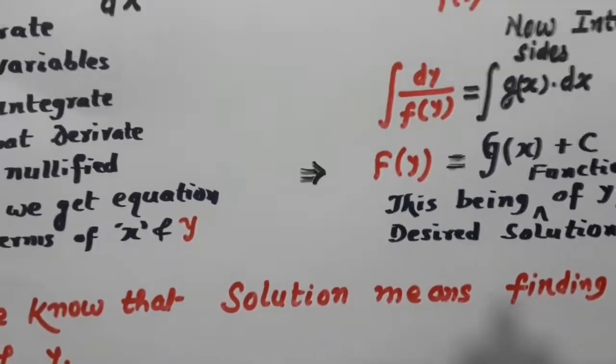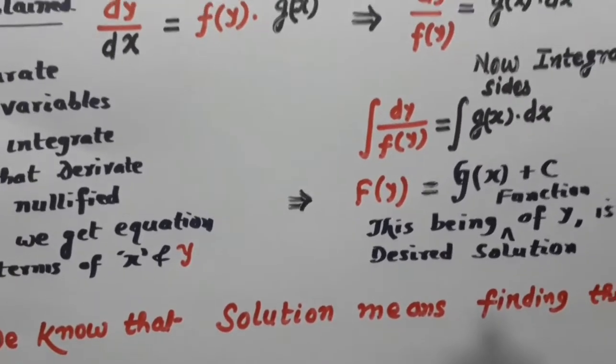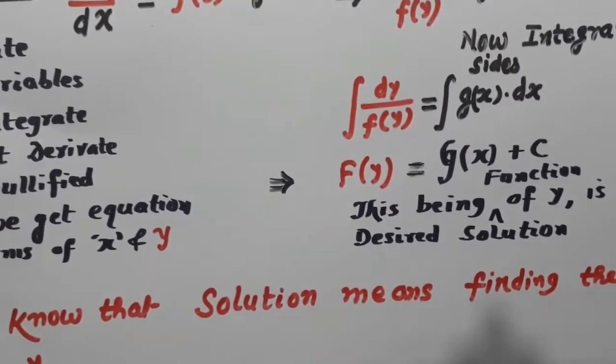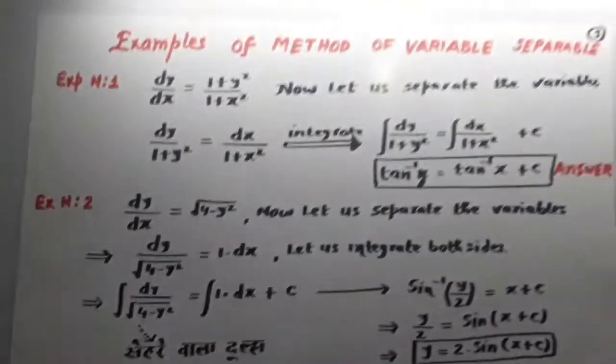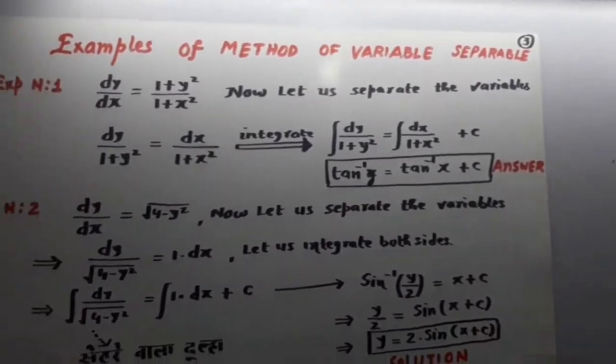So, this method is known as method of variable separable. We have to separate x on one side and y on the other side. Now, I am coming with my examples here. These are two examples.